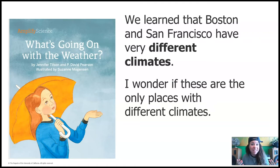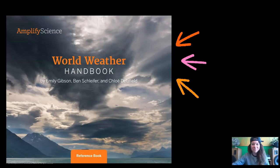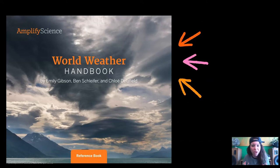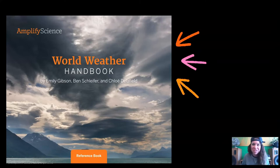I'm predicting that many different places in the world will have different climates. So today we're going to be using this book. It's called the World Weather Handbook, and you can access it digitally by asking your teacher. I'm sure your teacher can get you access to this book, but if you can't get access to this book, that's okay too. You can follow along with me, and I'll show you all the pages that you need.